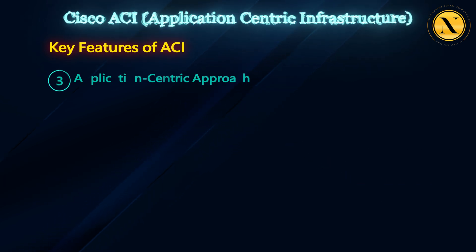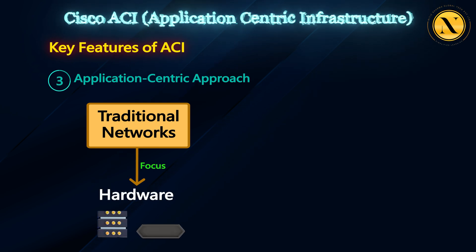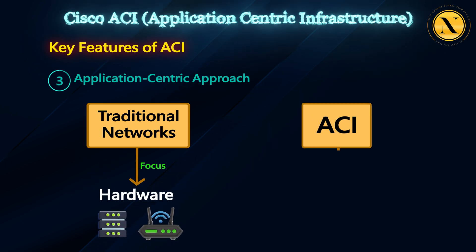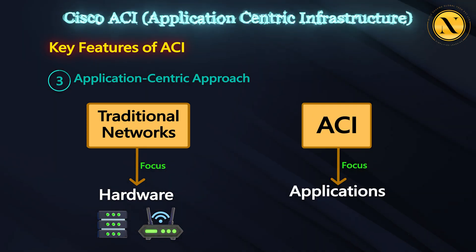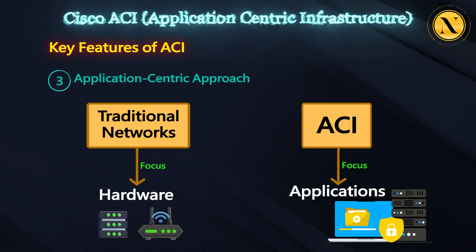Application-centric approach: traditional networks focus on hardware, whereas ACI focuses on applications, ensuring they get the best performance and security.